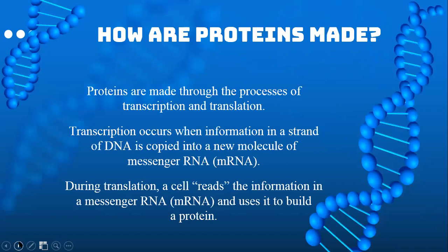How are proteins made? Proteins are made through the processes of transcription and translation. Transcription occurs when information in a strand of DNA is copied into a new molecule of messenger RNA. During translation, a cell reads the information in a messenger RNA and uses it to build a protein. I will now hand you over to Divina.